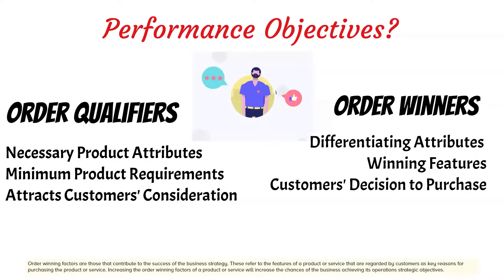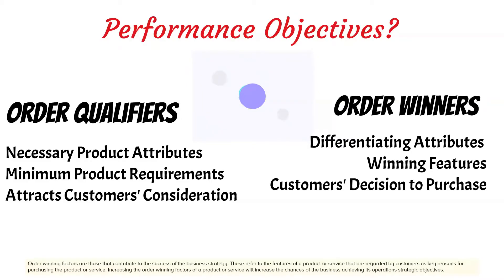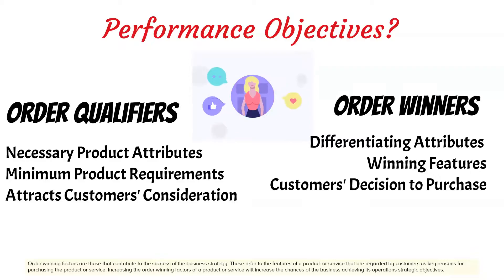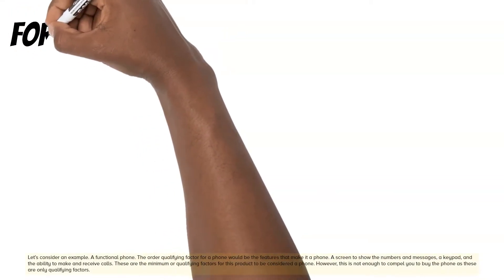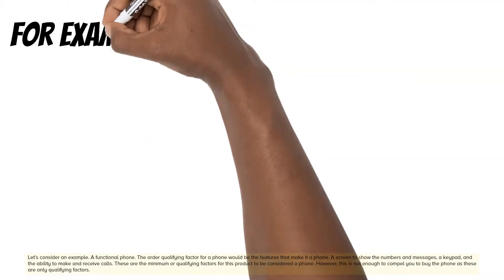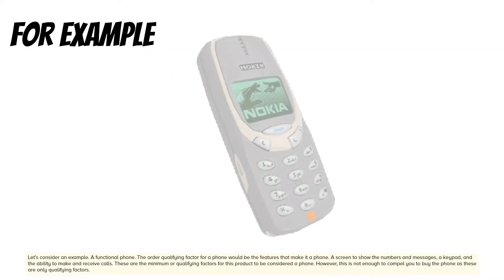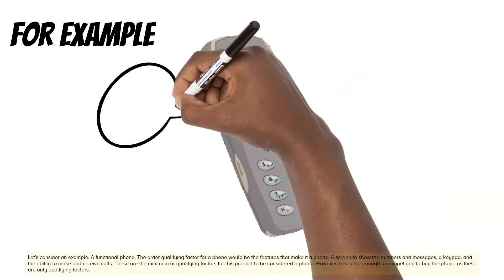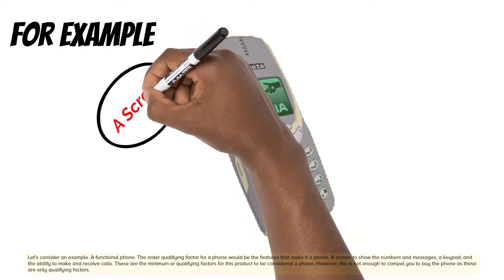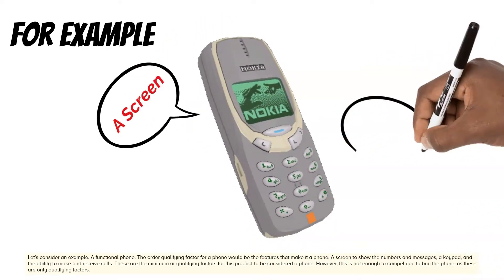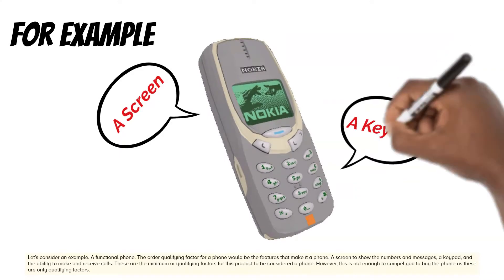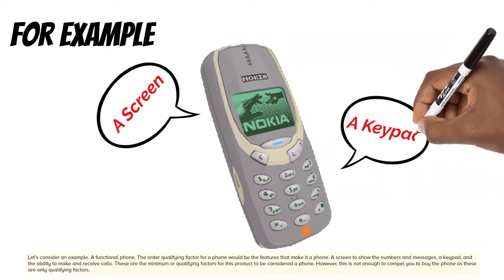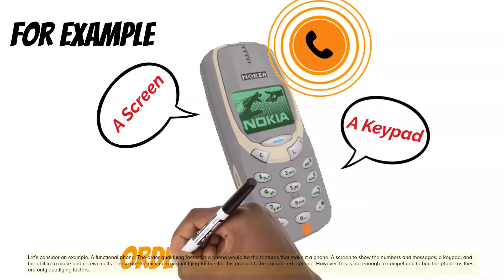Increasing the order winning factors of a product or service will increase the chances of the business achieving its operations strategic objectives. Let's consider an example: a functional phone. The order qualifying factor for a phone would be the features that make it a phone — a screen to show numbers and messages, a keypad, and the ability to make and receive calls. These are the minimum or qualifying factors for this product to be considered a phone.